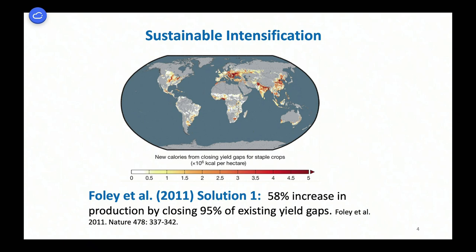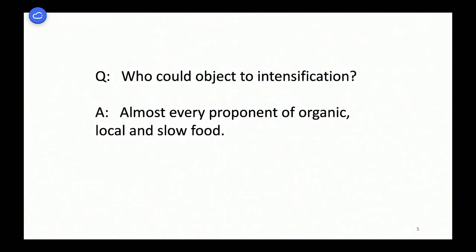On sustainable intensification: Foley says we need a 58% increase in production by closing 95% of existing yield gaps. Who could object to this? Almost every proponent of slow, local, and organic food. The local food movement builds community — the local food system and the people engaged in it build community, and this is an unqualified positive. That's the unassailable reason to be engaged in such a movement, but I want to talk about other dimensions of it.